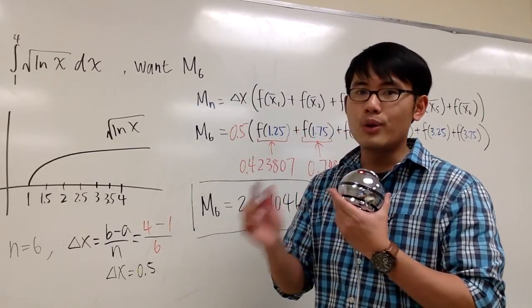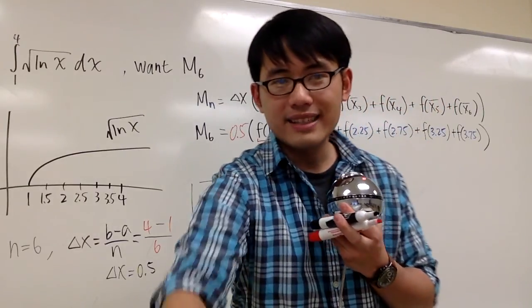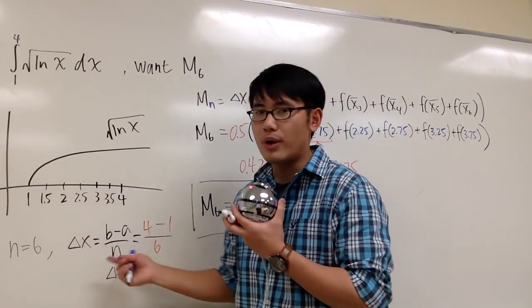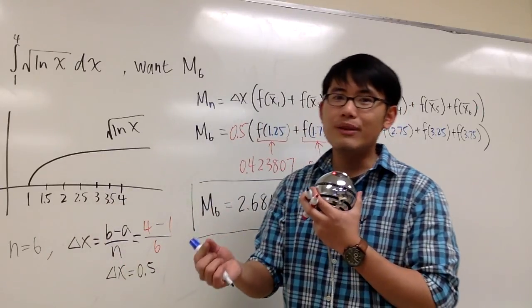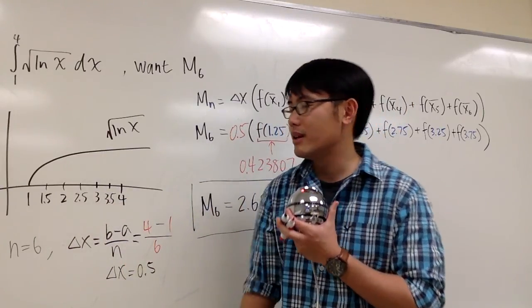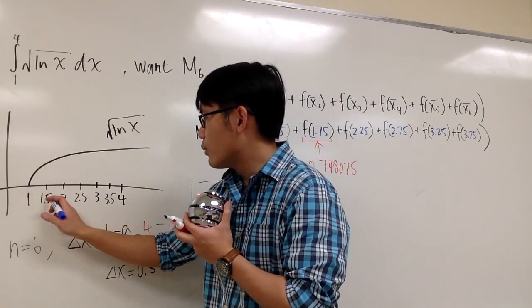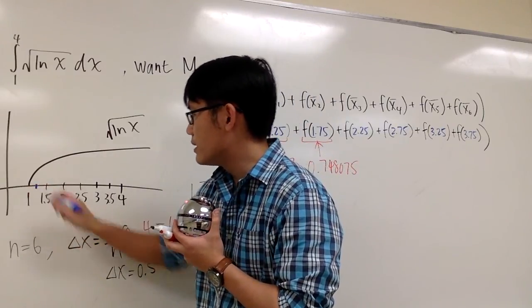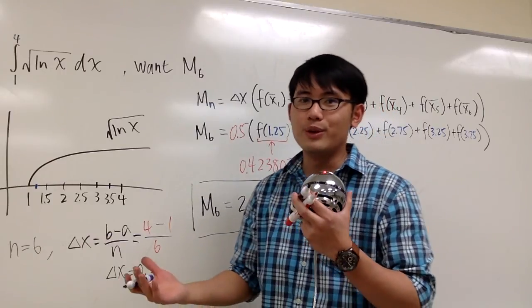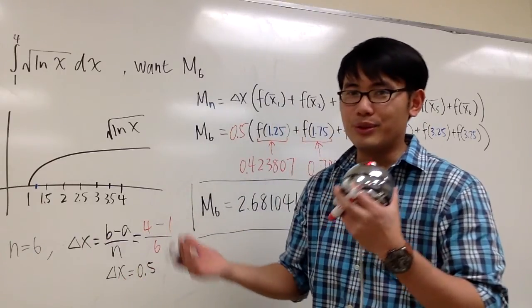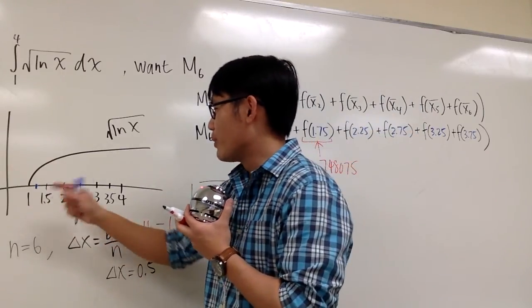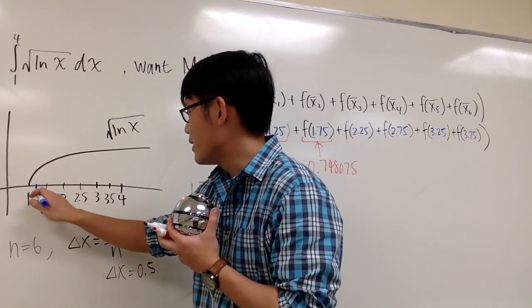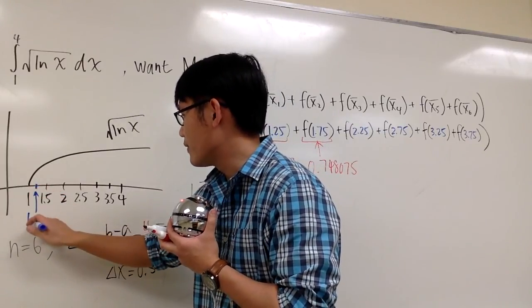We are not using any of the left or right endpoints, but rather we have to figure out the middle number. Look at 1, look at 1.5, figure out what's the middle number. A couple ways to do it. The easiest way is that you do it in your head. Between 1 and 1.5 is 1.25, of course. If you would like to use a formula, it's the average of these two numbers: 1 plus 1.5 divided by 2, which gives you 1.25.